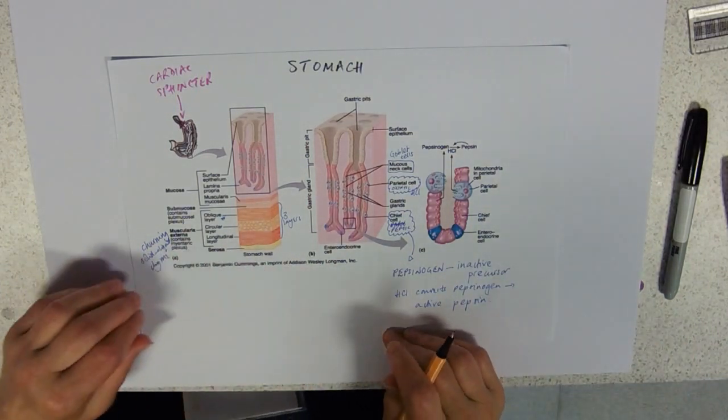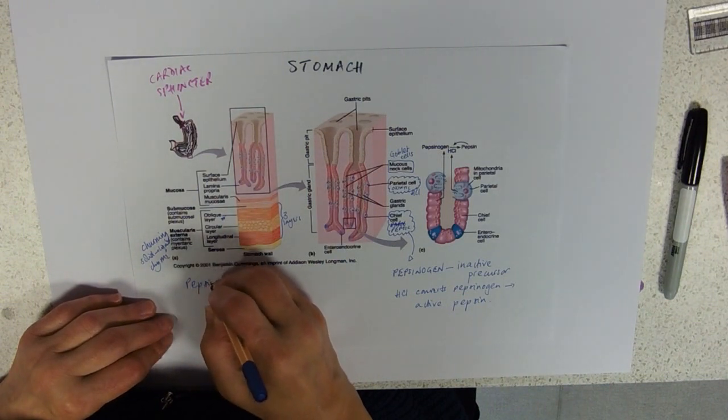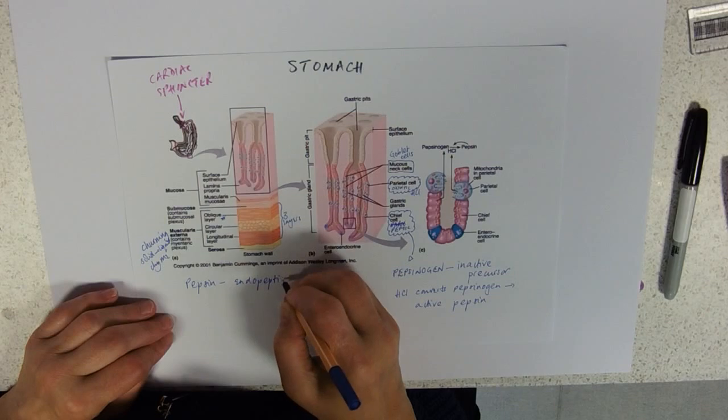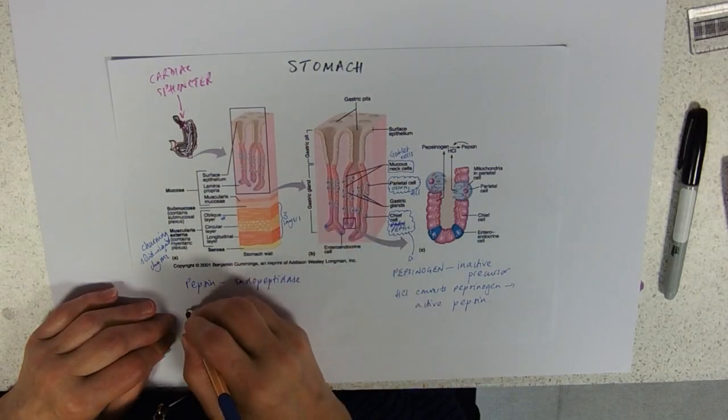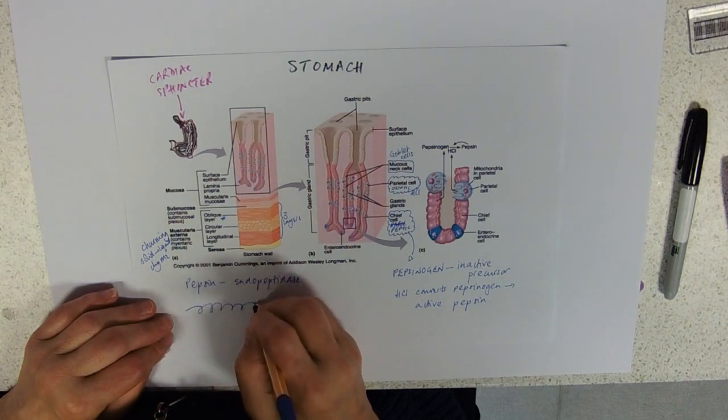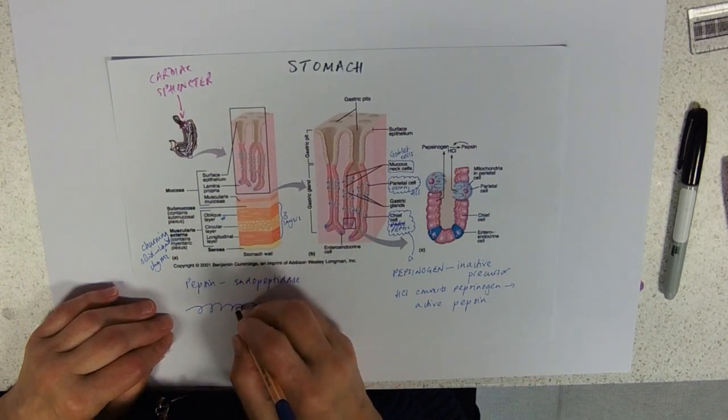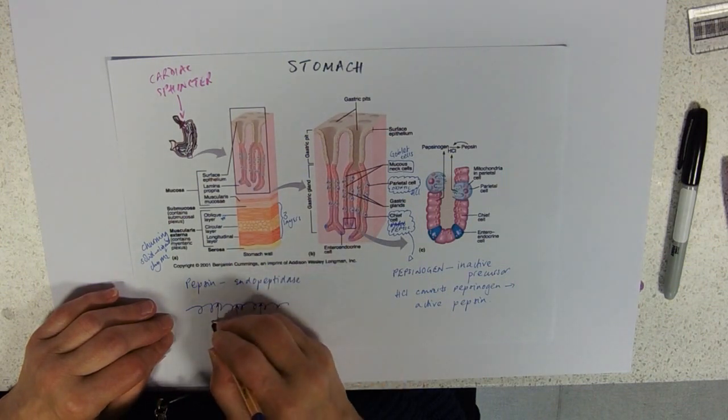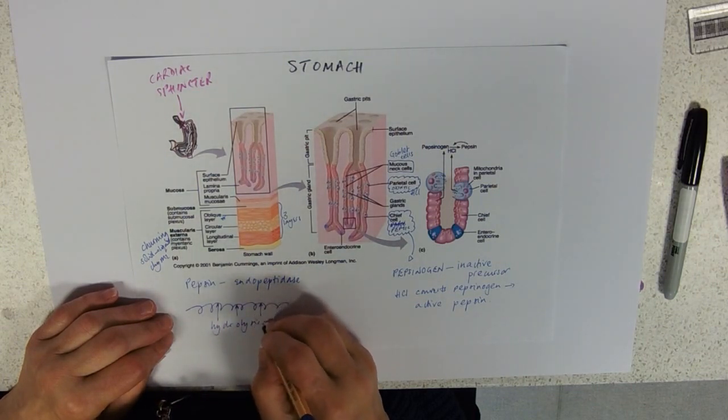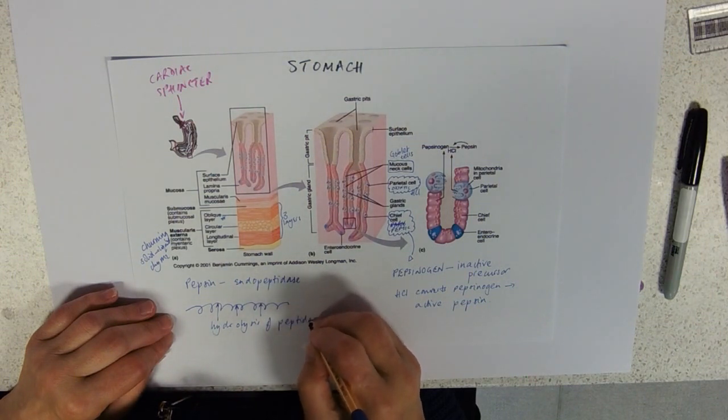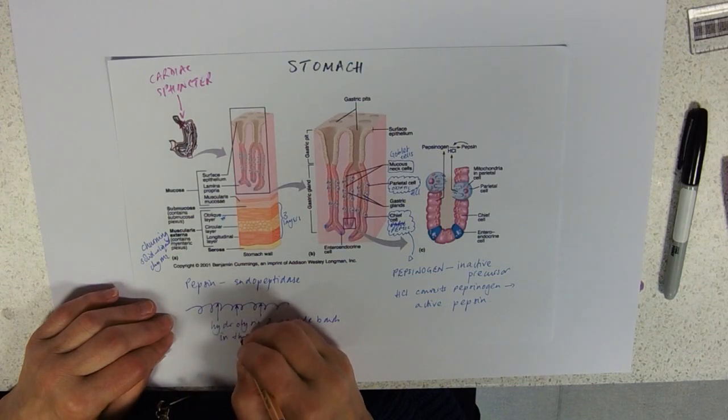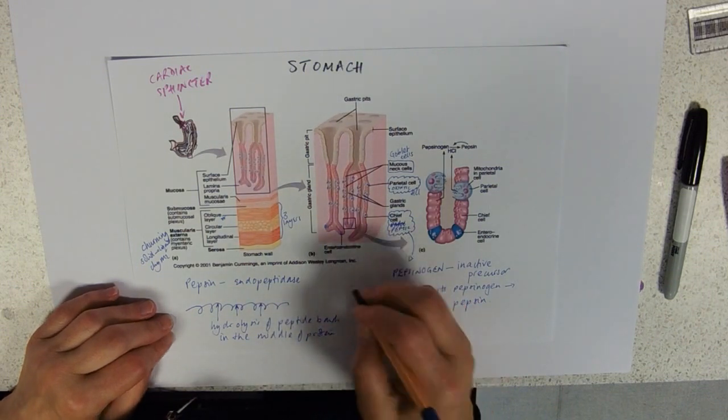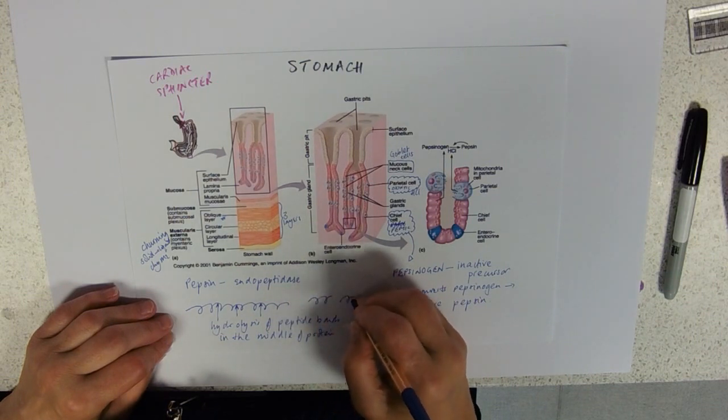What do we need to know about pepsin? This is where protein digestion starts. Pepsin is an endopeptidase. What does that mean? Endo means inside, so if you imagine your protein, an endopeptidase is breaking peptide bonds—hydrolyzing peptide bonds—right in the middle. We've got hydrolysis of peptide bonds in the middle of the protein.